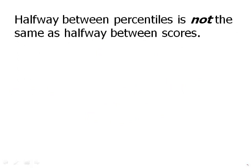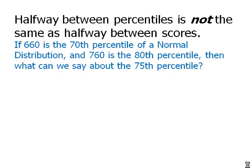Finally, this is a very subtle and difficult idea to understand. Halfway between percentiles is not the same as halfway between scores. What do I mean by that? Well, consider this theoretical practice question. If 660 is the 70th percentile of a normal distribution, some kind of normal distribution, and 760 is the 80th percentile, then what can we say about the 75th percentile? So this is kind of a vaguely worded question. And this might be worded much more precisely, for example, as a quantitative comparison. But the basic idea is we have a normal distribution.